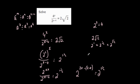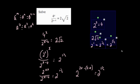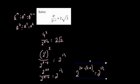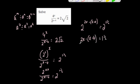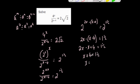Since both sides are powers of 2, the powers must be equal. So: 2x minus (x minus 4) equals 1 and a half. Expanding: 2x minus x plus 4 equals 1.5. Simplifying: x plus 4 equals 1.5. Subtracting 4 gives x equals minus 2.5, or minus 2 and a half.